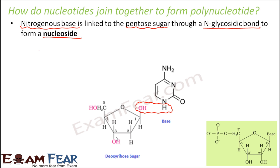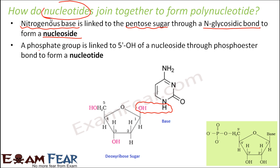This structure which is formed — sugar plus base — is known as a nucleoside. When we talk about nucleotide, the nucleoside combines with the third component, that is the phosphate group, and then a nucleotide is formed. So nucleoside plus phosphate group forms a nucleotide. A phosphate group is linked to the 5' OH of a nucleoside through a phosphoester bond to form a nucleotide.